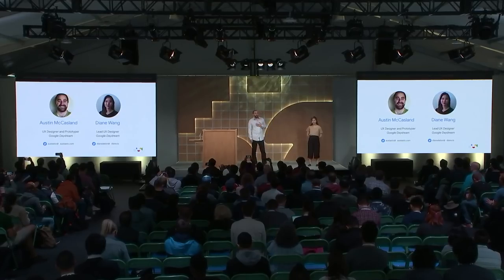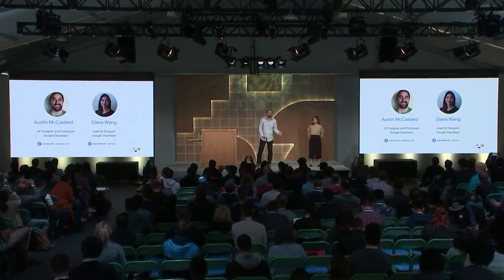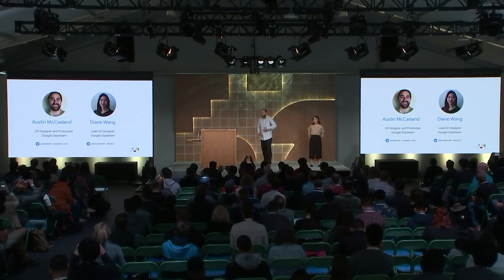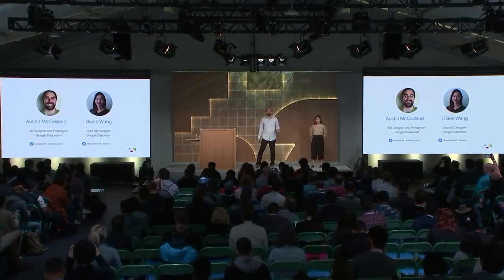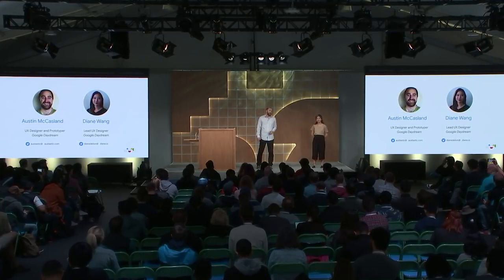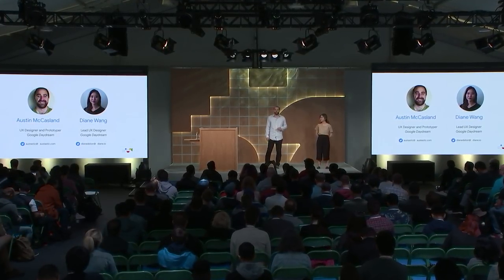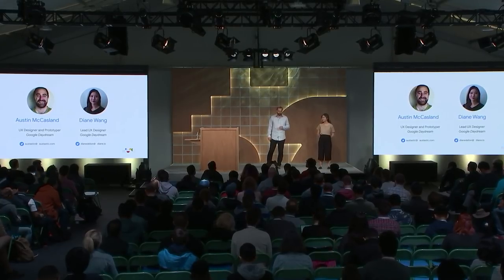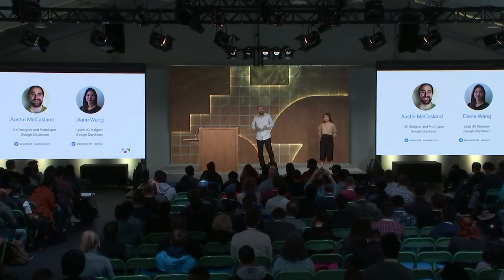My name is Austin McCasland. I am a UX designer and prototyper at Google Daydream. Before I joined Google, I've written a couple of courses on AR and VR product design and development. I've designed and developed some award-winning AR apps. And I'm really passionate about spatial and immersive computing.